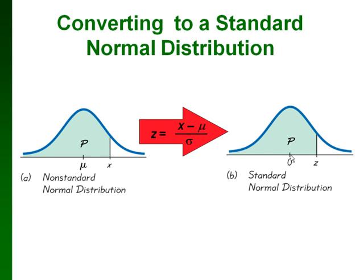Notice we have the picture that looks the same, only now in the middle for our mean we have 0. And instead of an x, over here we have a z.